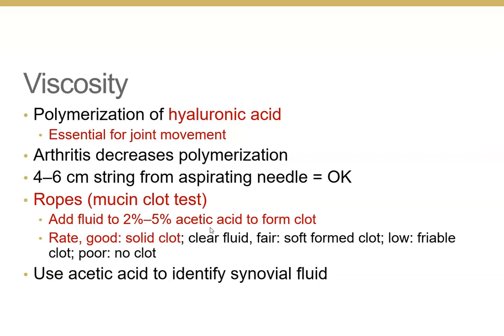There is also the Ropes test, also known as the mucin clot test. You add fluid to acetic acid and it forms a clot. A good solid clot is normal; a soft clot is fair; a friable or disintegrating clot indicates low viscosity; and no clot at all is poor.